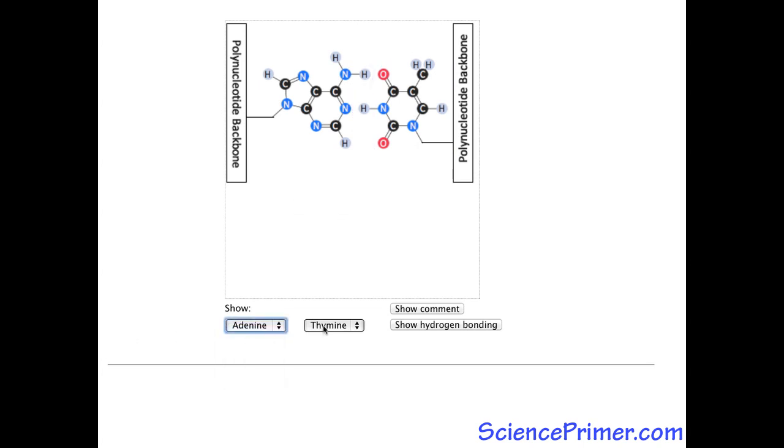Stable pairings occur between guanine and cytosine, and between adenine and thymine, or adenine and uracil in RNA.